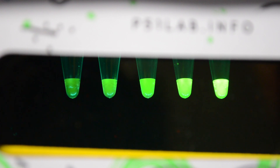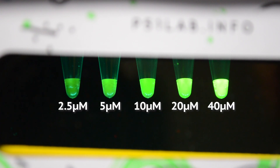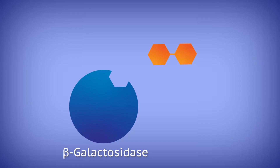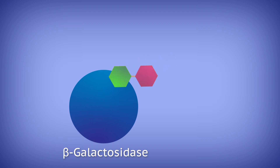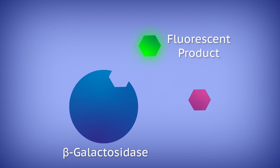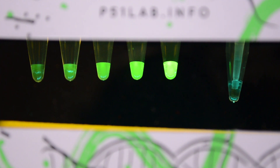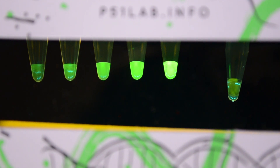Each lab group will start by creating a fluorescent dilution series to use as a visual standard scale. Groups will then use the enzyme beta-galactosidase to catalyze a reaction that releases a fluorescent product into solution. As the reaction progresses, more fluorescent product will be made, and students compare the brightness of their reaction with the visual scale to measure the concentration of product over time.